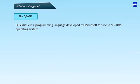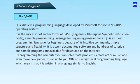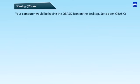QBasic is a programming language developed by Microsoft for use in MS-DOS operating system. It is the successor of earlier forms of BASIC (Beginner's All-Purpose Symbolic Instruction Code), a simple programming language for beginning programmers. QB is an ideal programming language for beginners because of its intuitive commands, simple structure and flexibility. It is well-documented software and hundreds of tutorials and sample programs are available for download on the internet. By programming the computer you can solve math problems, create art or music, and even make new games. QBasic is a high-level programming language which means that it is written in a language similar to English.